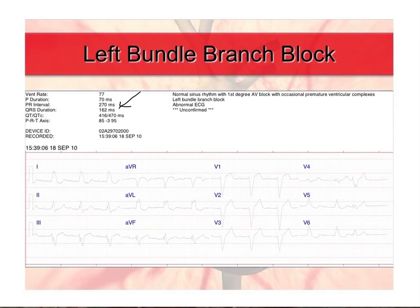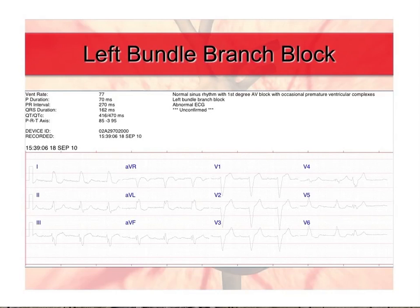Look at the QRS duration here. Remember, if you have a wide QRS complex, you're thinking of only a few things: a supraventricular rhythm with aberrancy, a ventricular arrhythmia, or hyperkalemia. We have a wide rhythm, we do have P waves, and they are married to the QRS complexes. We have a regular — though prolonged — PR interval of 270 milliseconds, so there's a first-degree AV block. It is a supraventricular rhythm with aberrancy.